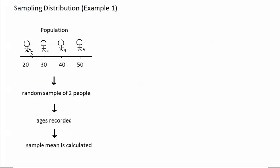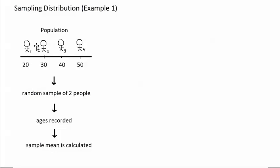The person might get person 1 and person 2, person 1 and person 3, person 2 and person 3, or person 3 and person 4. Also, the number that the sample mean comes out to depends on which two people become the actual sample. If the person gets person 1 and person 2, the sample mean will be 25, because the sample will have a 20-year-old and a 30-year-old.